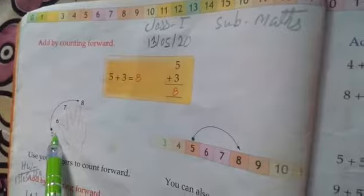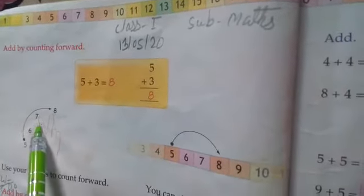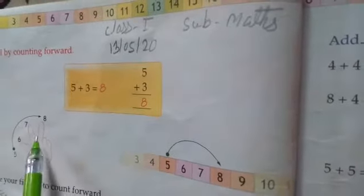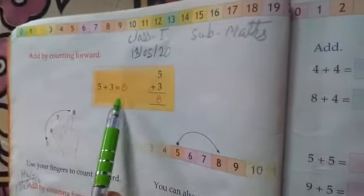So 5 plus 1, equal to 6. 6 plus 1, equal to 7. 7 plus 1, equal to 8. So 5 plus 3, equal to 8.